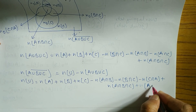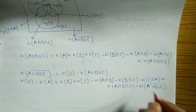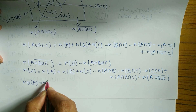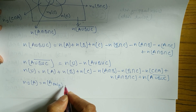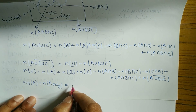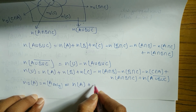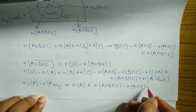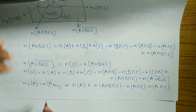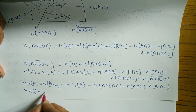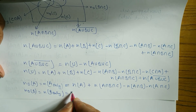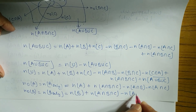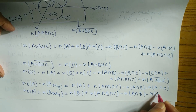To find n(only A): n(only A) = n(A) + n(A∩B∩C) − n(A∩B) − n(A∩C). Similarly, to find n(only B): n(only B) = n(B) + n(A∩B∩C) − n(A∩B) − n(B∩C).